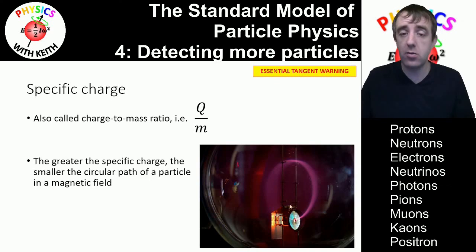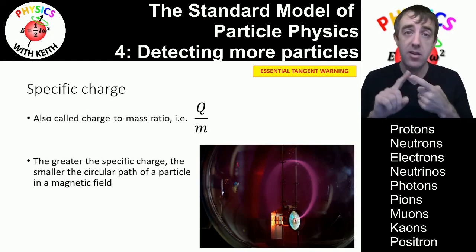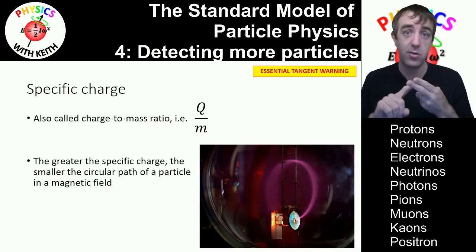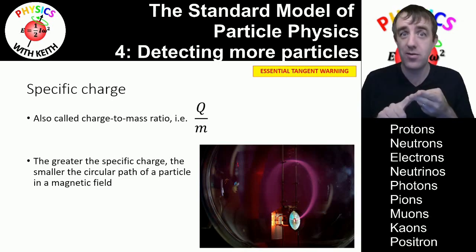In A-level physics you'll learn about how you can make measurements of the diameter of the circular path and use that to determine the specific charge of the particle. So now we have a means for accelerating particles and we have a means for detecting the particles that are produced when particles collide. So what did we find? In the next video we'll be having a look at something called the particle zoo.